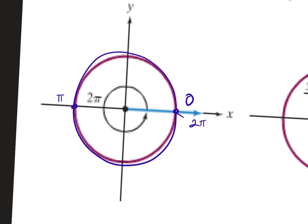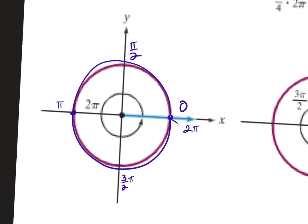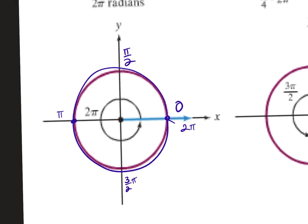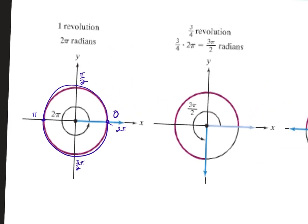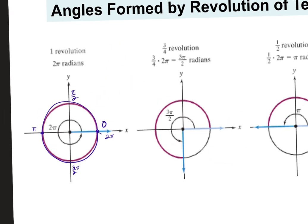Halfway around would be pi. At the top it would be halfway between zero and pi, which is pi over two. At the bottom would be halfway between pi and two pi, which is three pi over two. We just lightly touched on that — today we're going to fill in the rest of it.